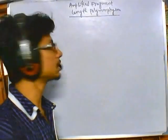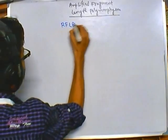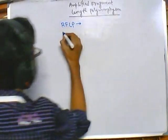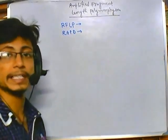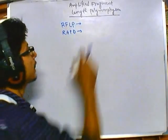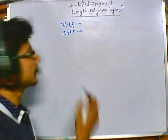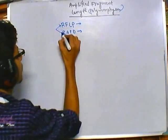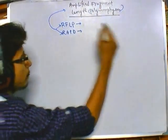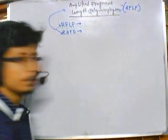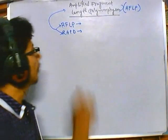We can detect this polymorphism using several techniques. One technique is RFLP, or Restriction Fragment Length Polymorphism. Another technique is RAPD, or Random Amplified Polymorphic DNA. These are two different techniques to identify polymorphic structures of DNA. But in this video we will see that if we combine both these techniques — RFLP as well as RAPD — we get a better technique called Amplified Fragment Length Polymorphism, or AFLP.